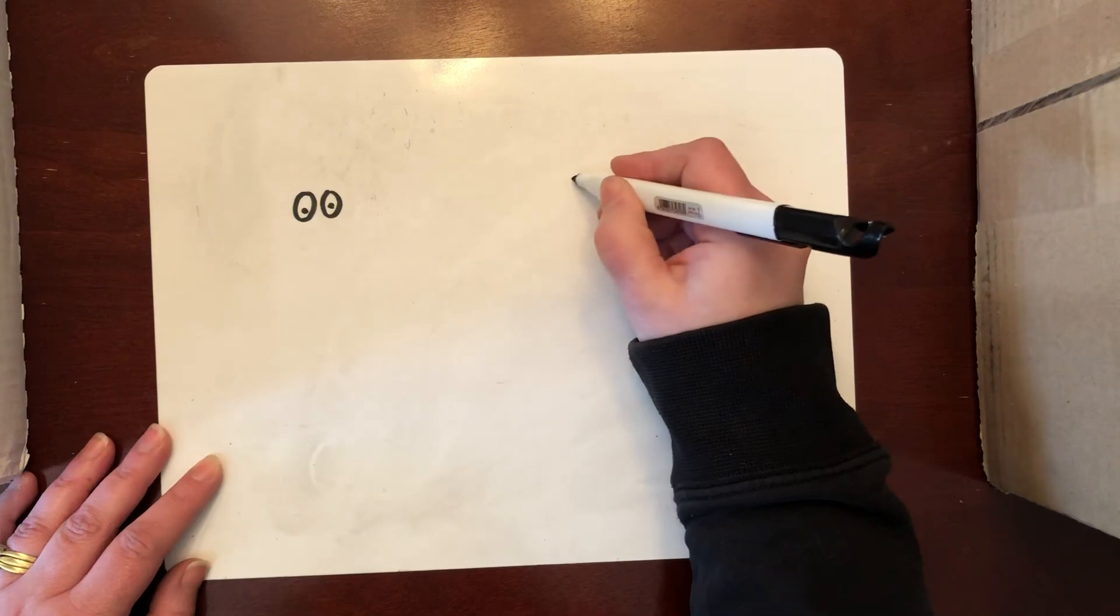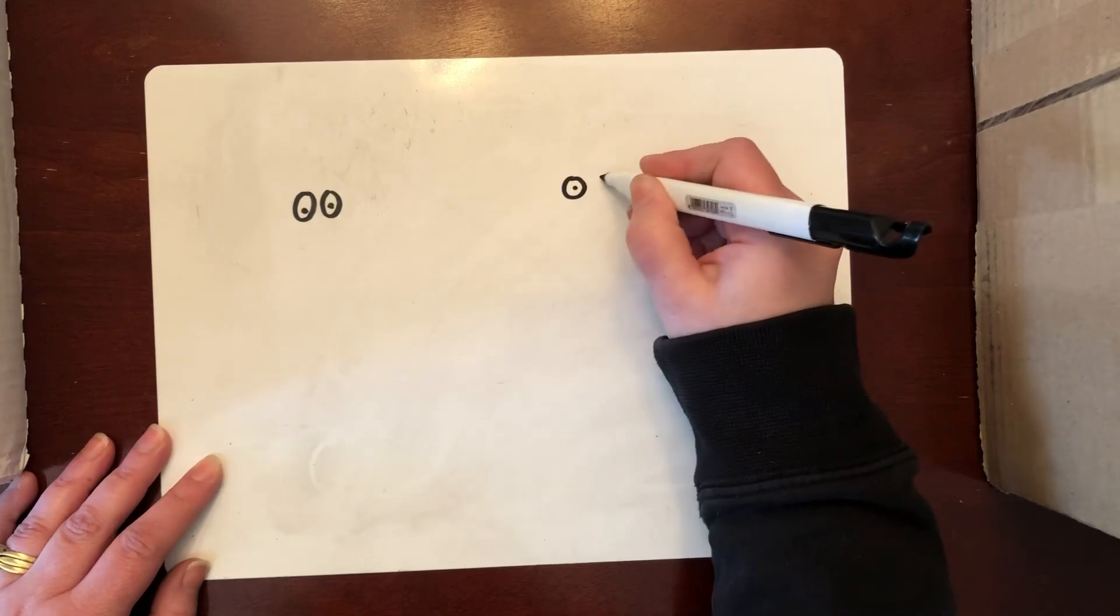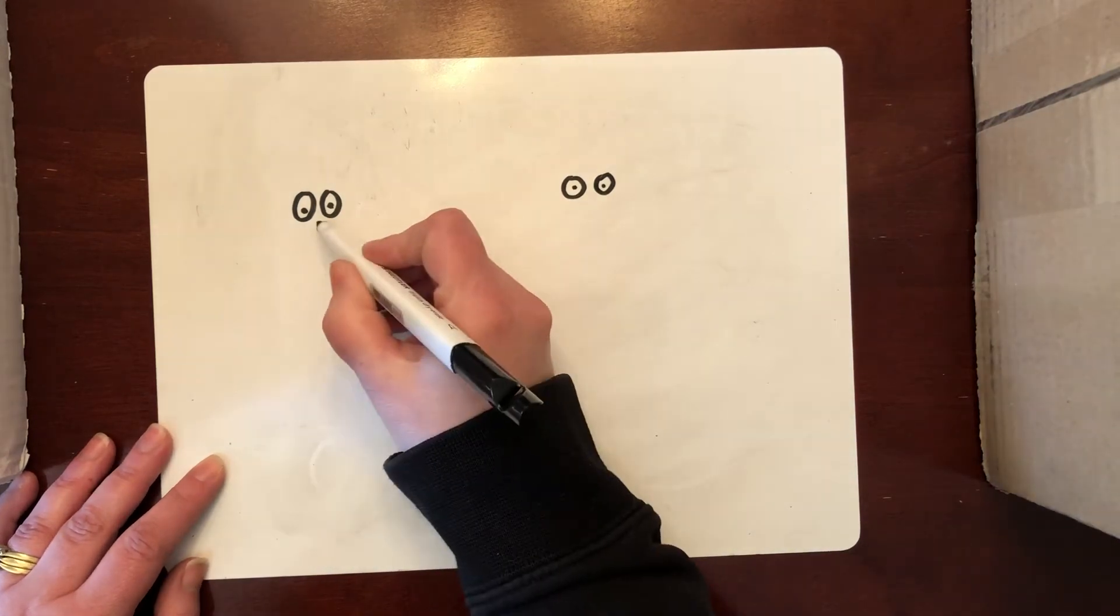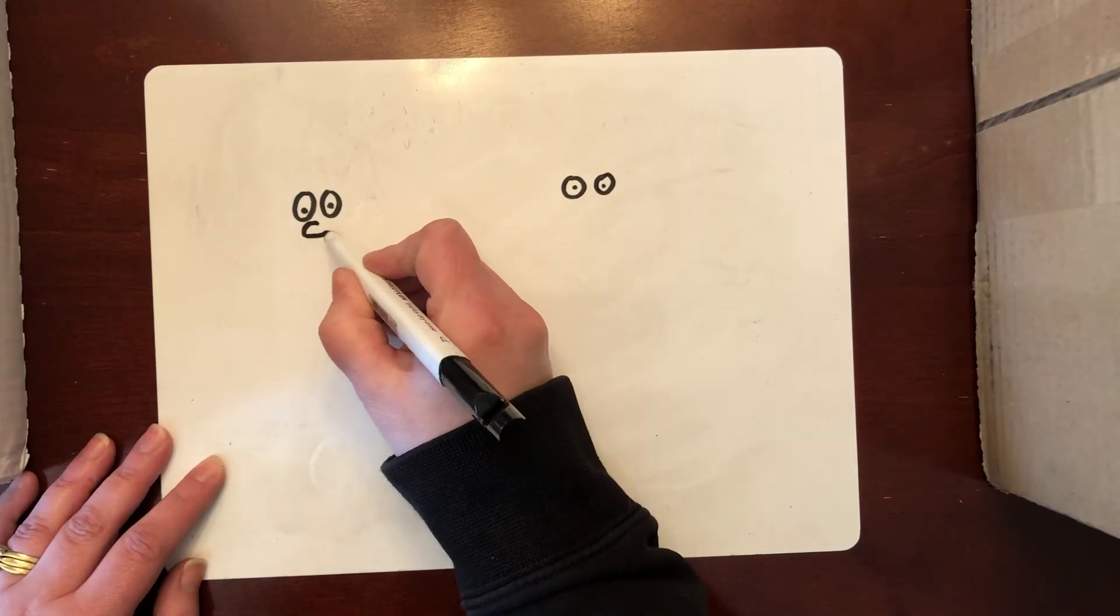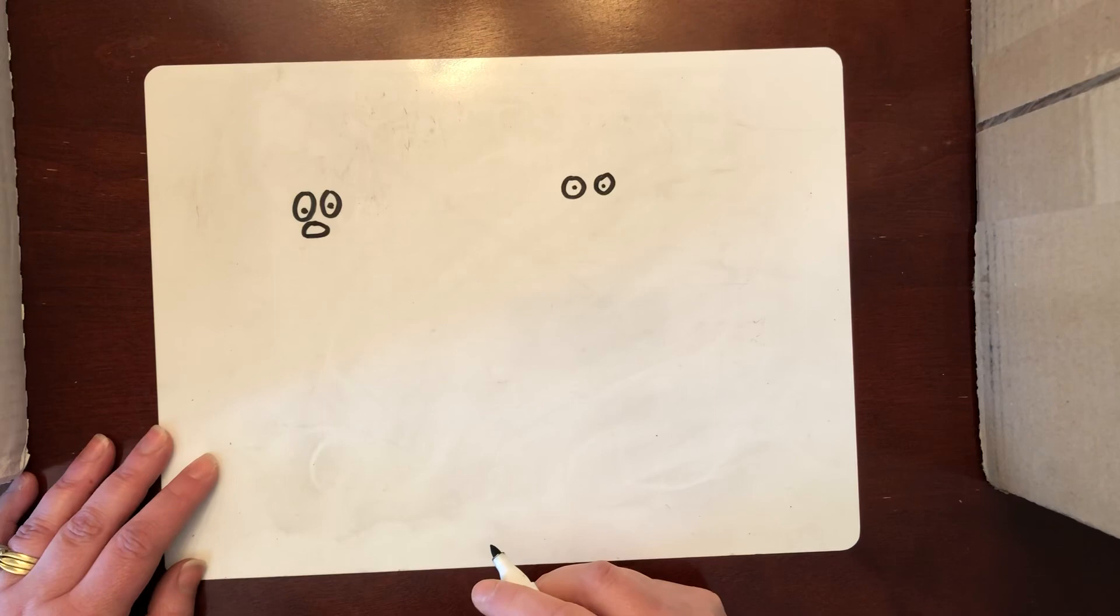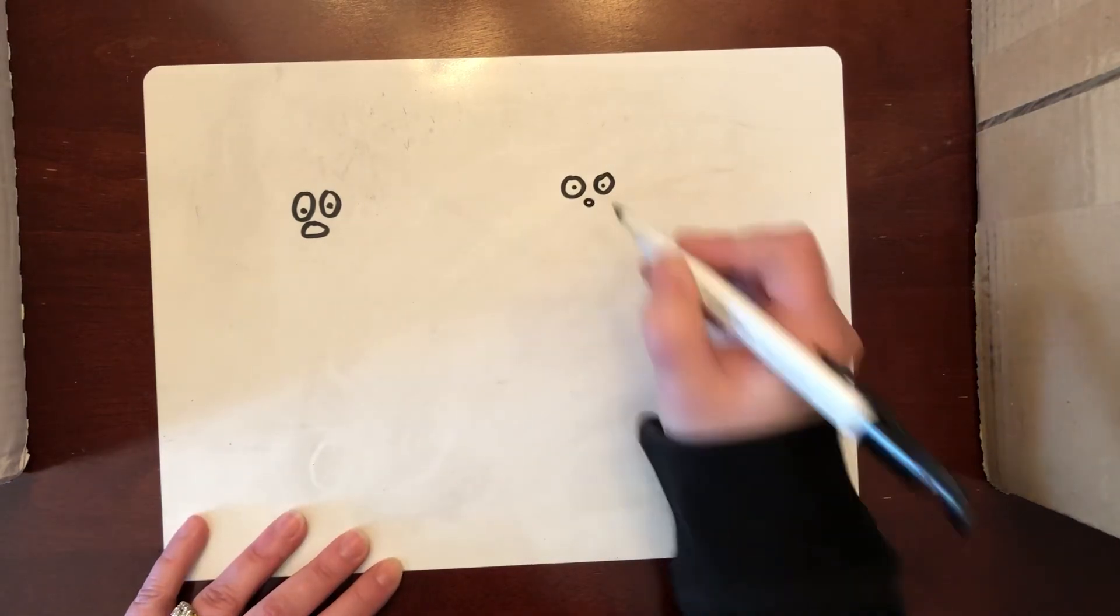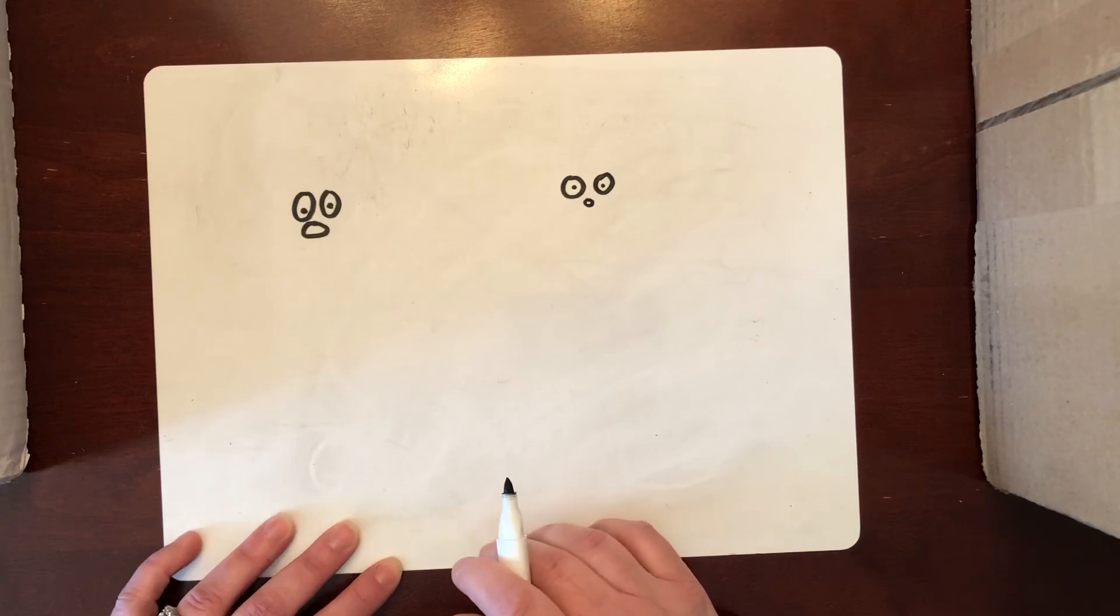You could actually even make them winking or their eyes closed if you'd like, and then I'm going to add a nose. The nose for the Seuss characters is often a flattened kind of oval and you can make them big, you can make them small, you can make it however you'd like.